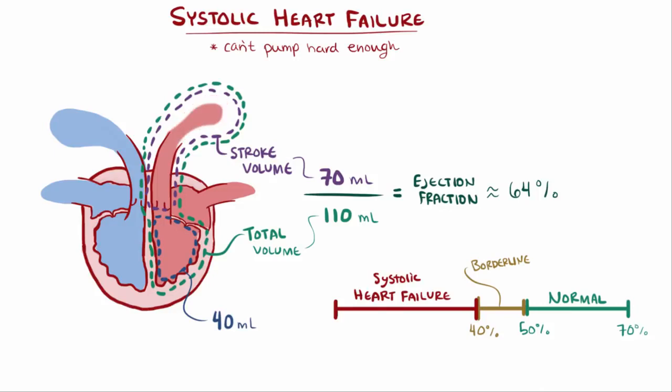So in our example, if the total volume of the left ventricle was 110 milliliters but only 44 milliliters was pumped out with each beat, then you have 44 milliliters divided by 110 milliliters, which is 40%. And we would say that person is in systolic heart failure.